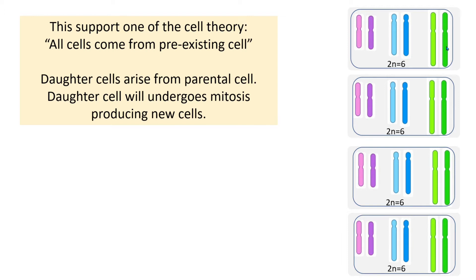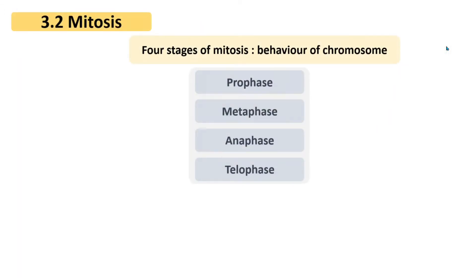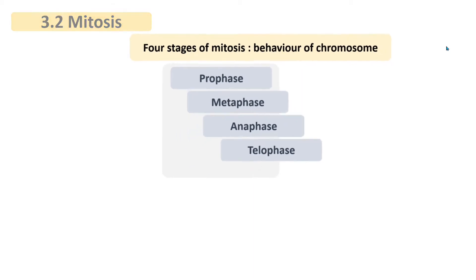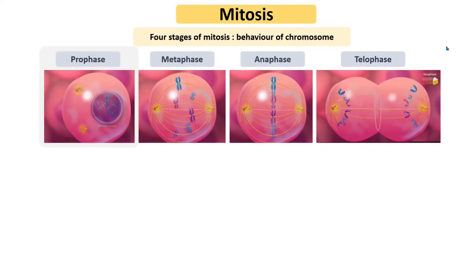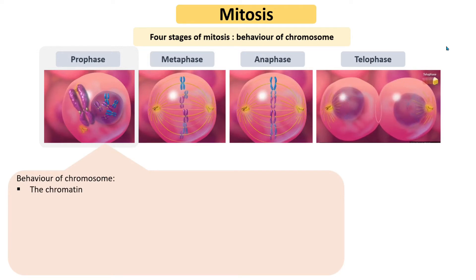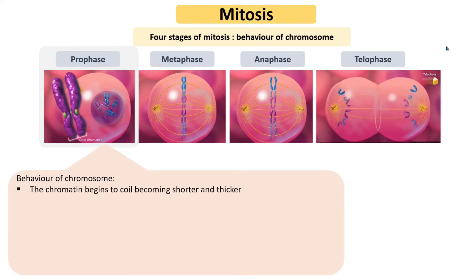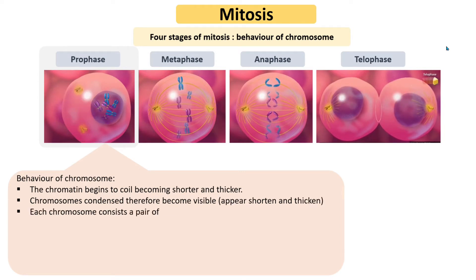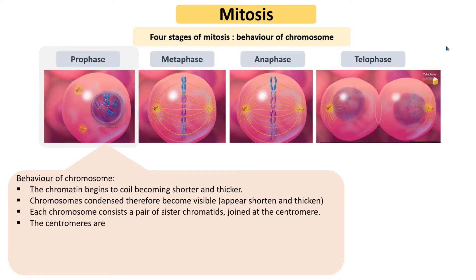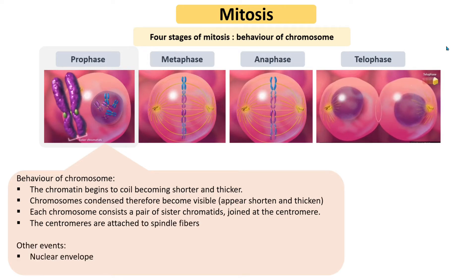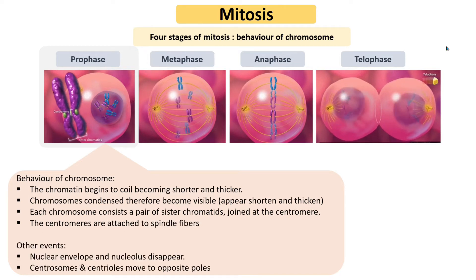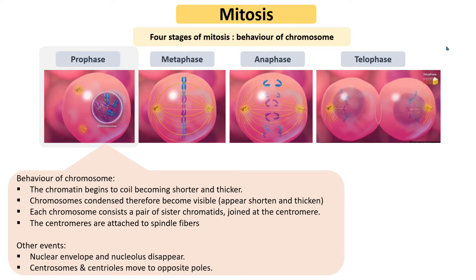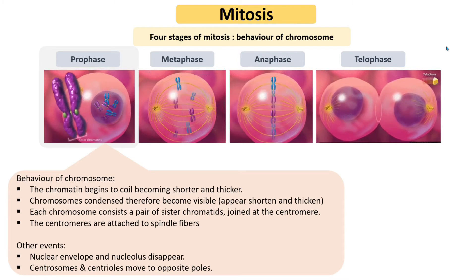In prophase, the behavior of chromosomes is as follows: the chromatin begins to coil, becoming shorter and thicker. Chromosomes condense and therefore become visible. Each chromosome consists of a pair of sister chromatids joined at the centromere. The centromeres are attached to spindle fibers. At the same time, the nuclear envelope and nucleolus disappear, and centrosomes and centrioles move to opposite poles.